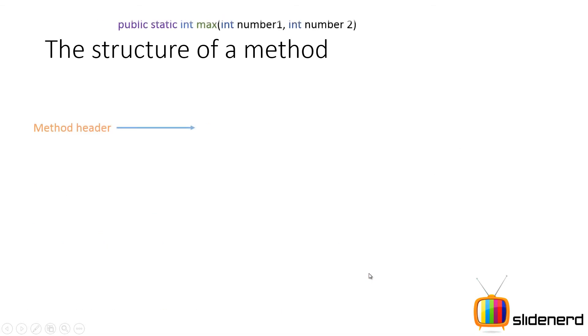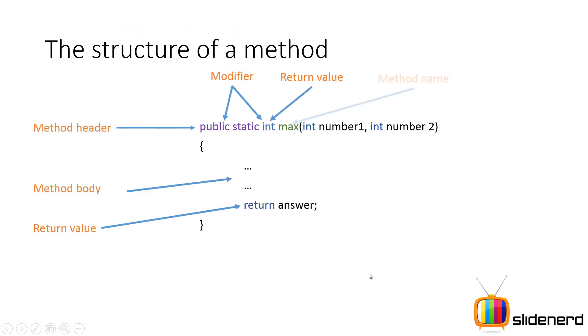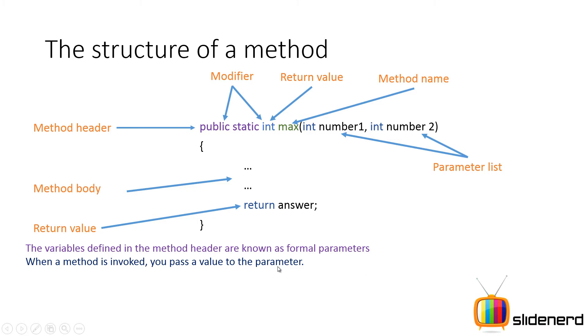So let's talk about further things that are associated with our method header, like the variables, the formal parameters. Now remember when you call a method, you pass the value to the parameter, which means if you want to call this method max, then there is probably three comma five, something like that which will be calling over here.